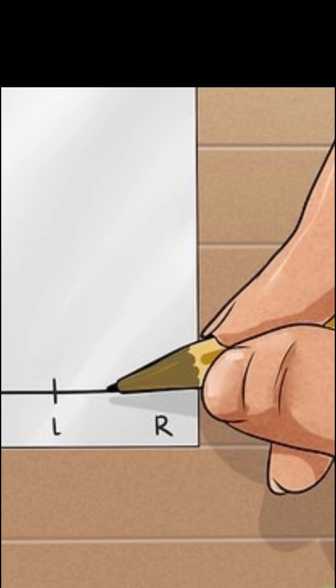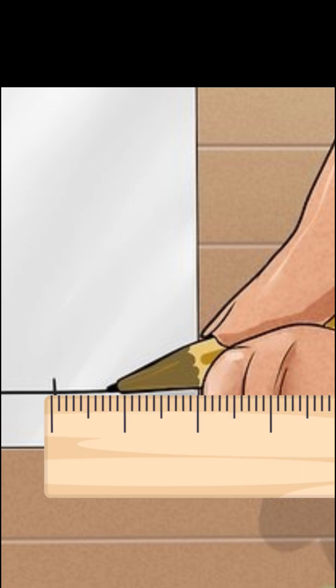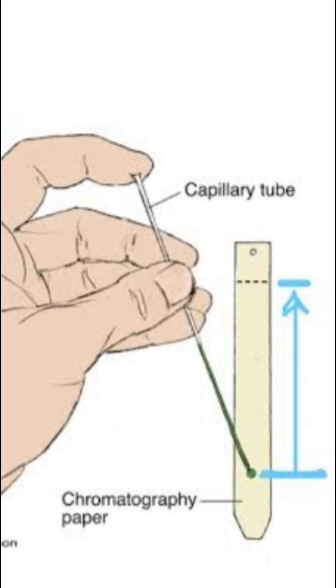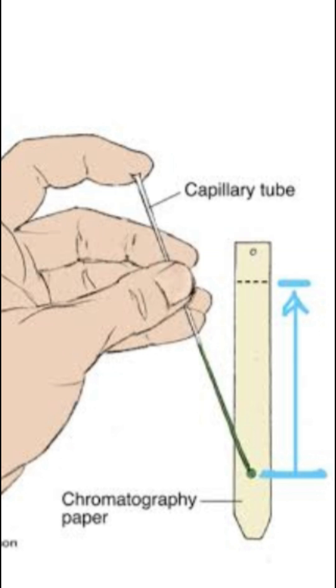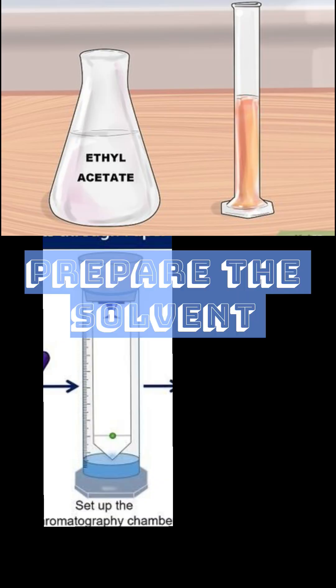The first step is to prepare the paper. Take a strip of chromatography paper and draw a light line one to two centimeters from the bottom — this is the baseline. Next, apply the sample: use a capillary tube or dropper to place a small drop of the sample on the pencil line. Let it dry and repeat two to three times to get a concentrated spot.